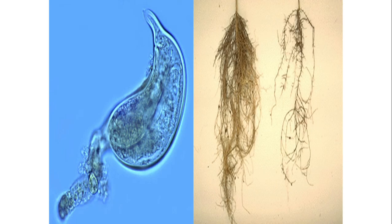These are the female nematodes feeding on the root cells of the root system. This shows the female nematodes and the infected roots. Here you can compare the healthy root versus the infected root.